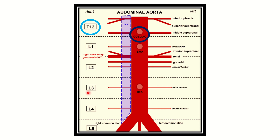These three vertebral levels are really very important: the celiac trunk is at Thoracic 12, the superior mesenteric artery is at Lumbar 1, and the inferior mesenteric artery is at Lumbar 3.